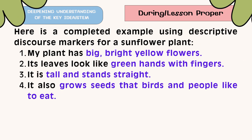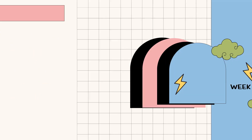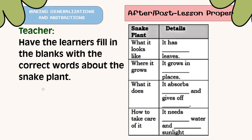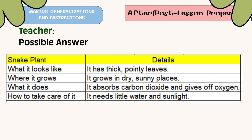Here is a possible answer. Making Generalization and Abstraction: Have the learners fill in the blanks with the correct words about the snake plant. Let's do this! Here is the possible answer.